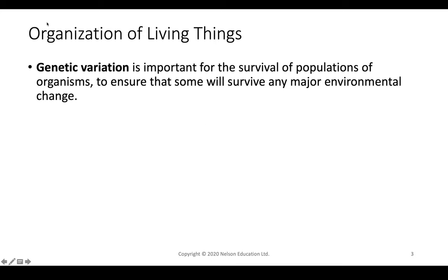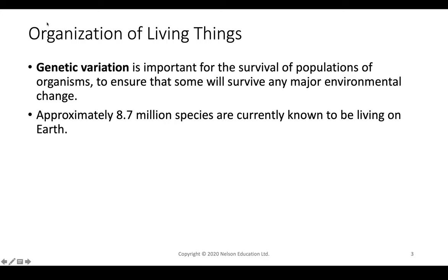When we talk about living things, every single living thing is a little bit different from the other living things in its species. We have genetic variation among populations in order to ensure that no matter what kind of disastrous event life throws at them, some of them will be able to survive whatever environmental change occurs.